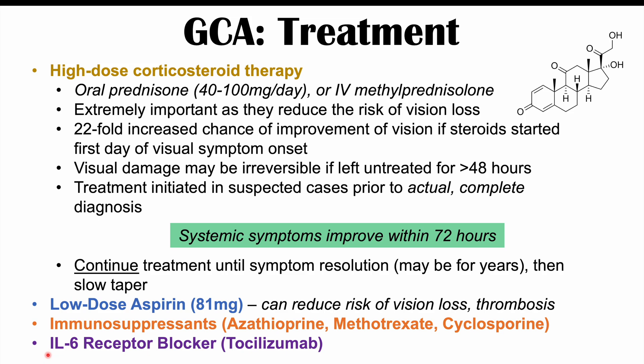Corticosteroid-sparing immunosuppressants such as azathioprine, methotrexate, and cyclosporine can also be used. A newer treatment option is tocilizumab, an interleukin-6 receptor blocker. Since elevated IL-6 levels are seen in GCA and IL-6 appears to play a role in pathophysiology, IL-6 receptor blockers represent a newer therapeutic approach. For more on rheumatological conditions, check out the rheumatology playlist, and please subscribe for more lessons like this one.